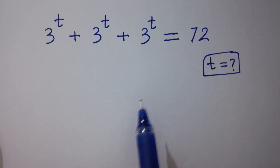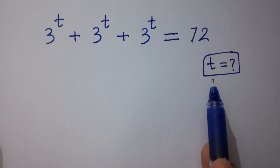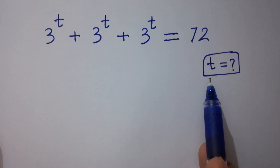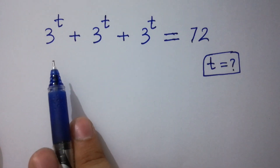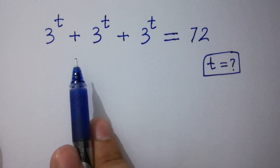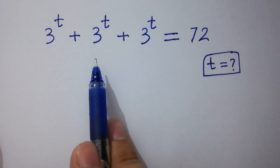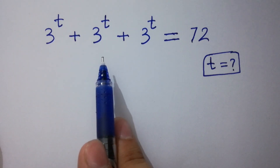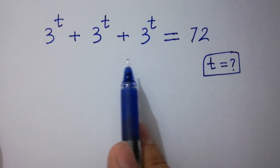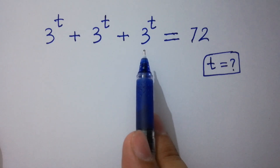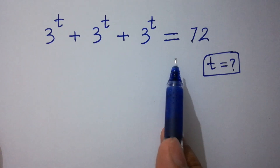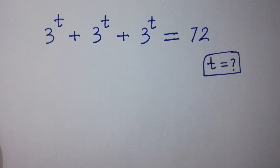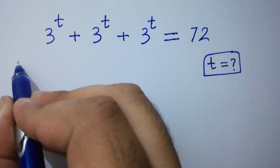Hello friends. Find the value of t if 3 to the power t plus 3 to the power t plus 3 to the power t equals 72. Let's have a solution.